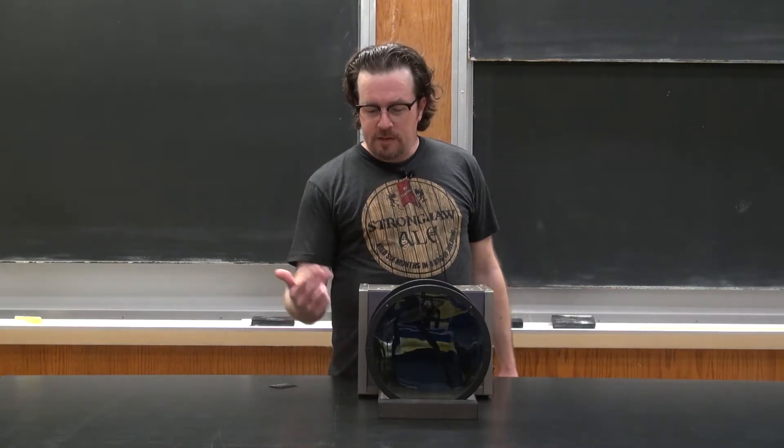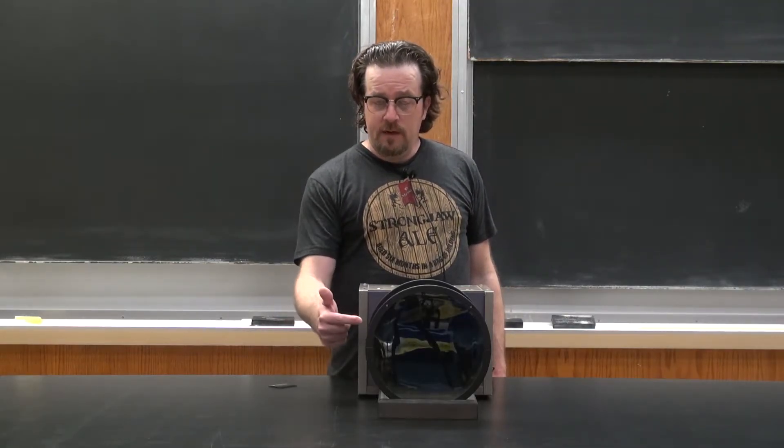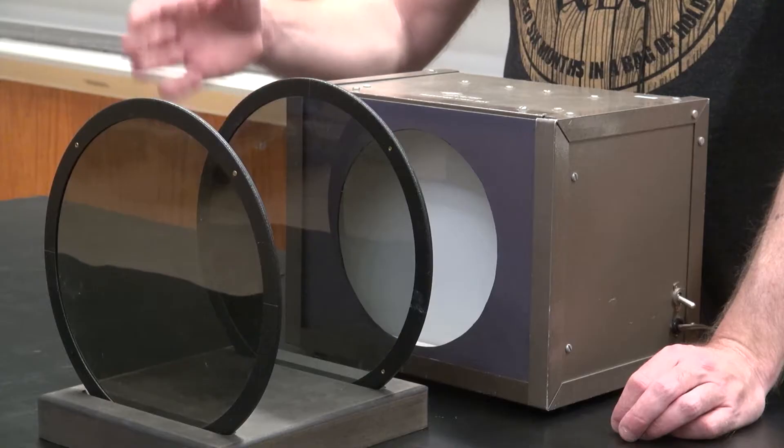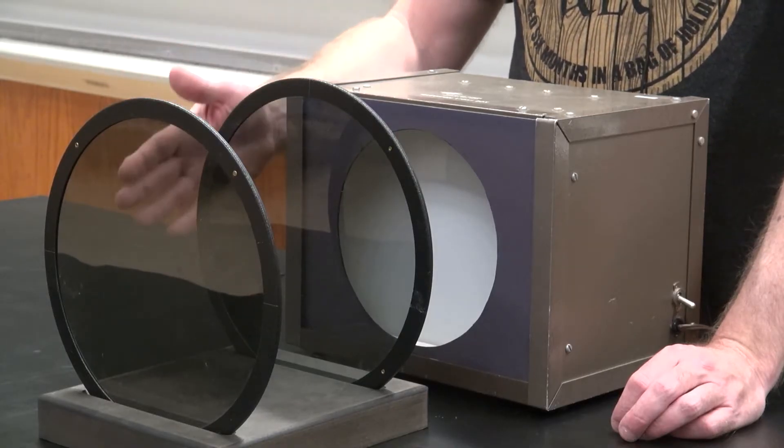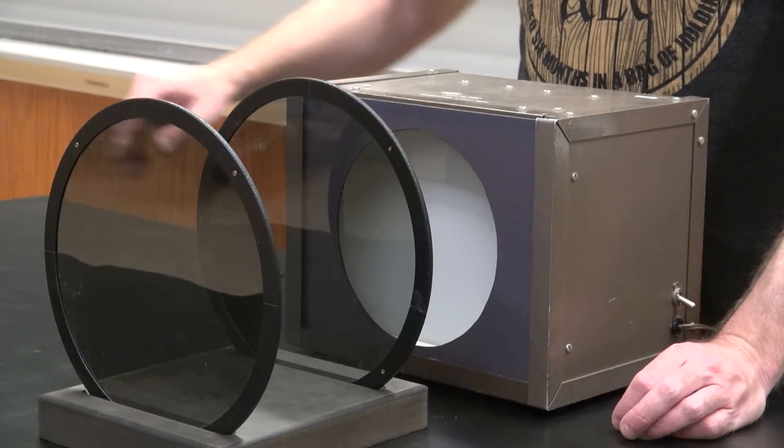So for this demo, I have two polarizing filters set up in front of this light source. This filter here, the first one, is oriented to only allow vertically polarized light through. This second filter here is set up to only allow the horizontally polarized light through.